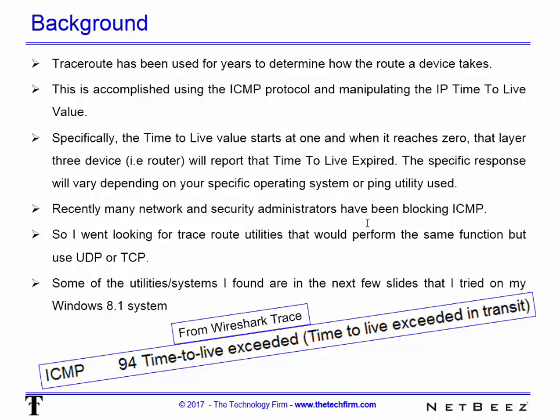Recently, many network and security administrators have been blocking ICMP for a whole bunch of reasons. So I'm looking for trace route utilities that could perform the same function but will use UDP or TCP. In this example, I'm just going to look at TCP. Some of the utilities and systems I found are in the next few slides, and I tried them on my Windows 8.1 system.